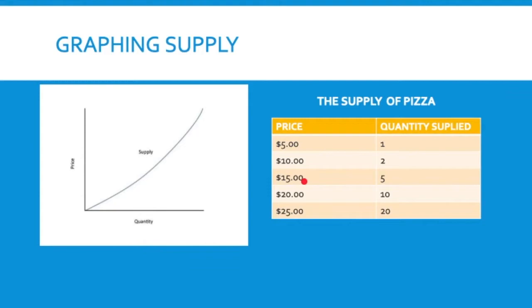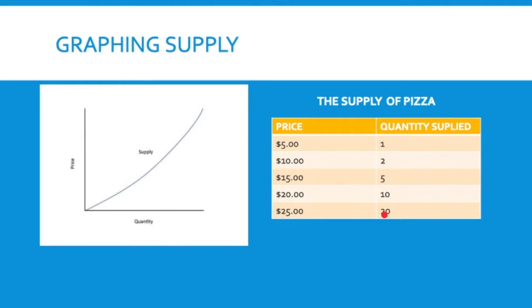If people would pay $15 for my pizza because it's really good, I'd produce five — five times $15 is $75, and it only costs $15 to produce them all, so I'd make a huge profit. As prices go up to $20 and $25, I produce more and more pizza because the profits keep going up and it's worth spending the extra time, even though producing 20 pizzas means I'm here all day.